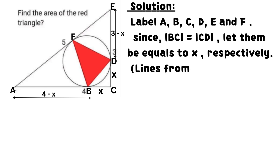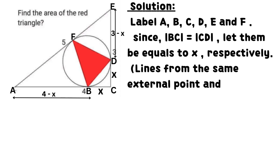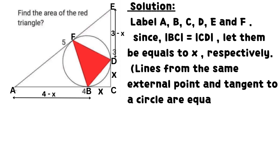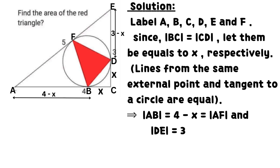Since BC equals CD, let them both equal X respectively. This is because lines from the same external point tangent to a circle are equal. It implies that AB equals 4 minus X, which also equals AF, and line DE equals 3 minus X.